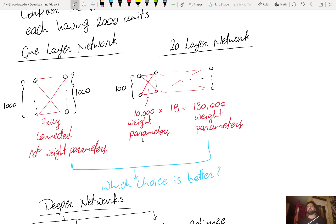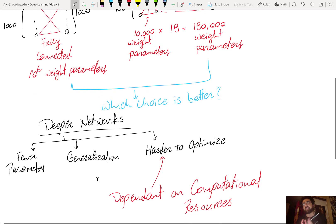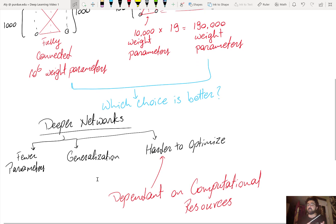Now, which choice is better? And again, that will come back to the question that we always discuss. Is it better to have a more complex hypothesis space or a simpler hypothesis space? And we always say that the answer depends on the nature of the problem and depends on the available computational resources. A deeper network will typically have fewer parameters.